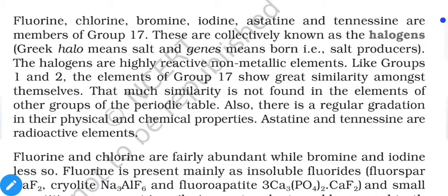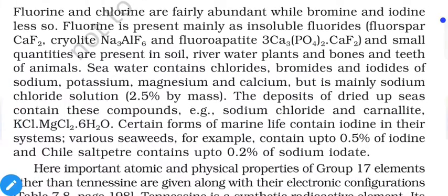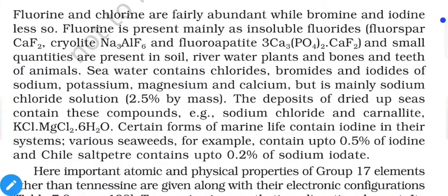There is a regular gradation in their physical and chemical properties. Astatine and tennessine are radioactive elements, so we do not have much data available for them. We will mainly concentrate on fluorine, chlorine, bromine, and iodine. Fluorine and chlorine are fairly abundant while bromine and iodine are less so.